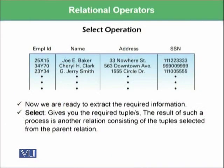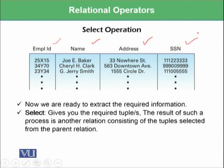One of the operators is the select operator, or select operation. This select operation — for example, we have the same employers table having employee ID, name, address, and social security number — and the select operation will give you the required tuples. For example, if you want to say that you need the employee having employee ID 25X15, you will be given only that tuple.